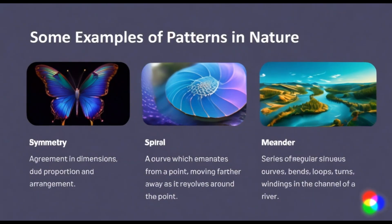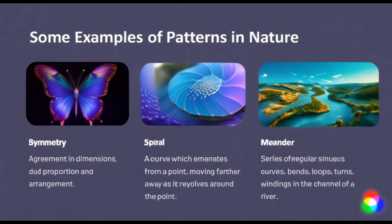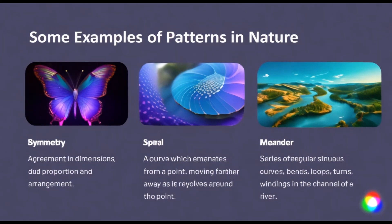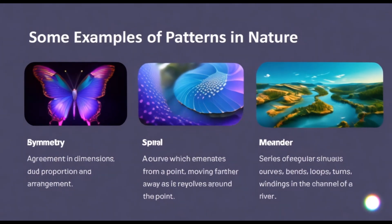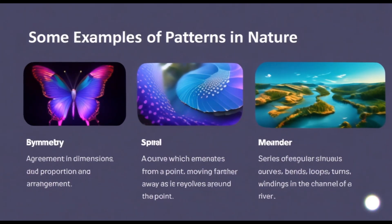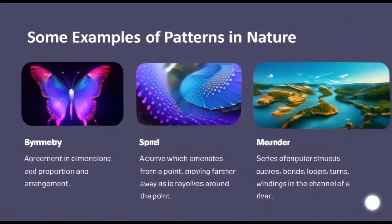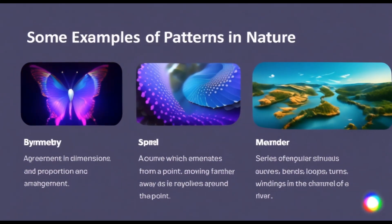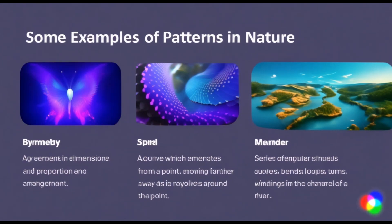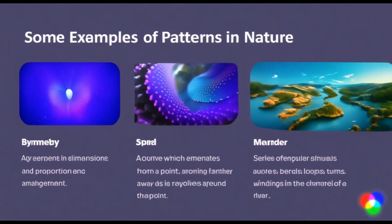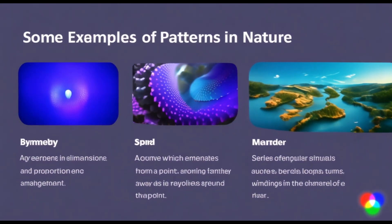Examples include symmetry in leaves, the spiral of a nautilus shell, meanders of a river, and the fractals found in plants like ferns. These patterns are not just visually pleasing — they reveal the mathematical structure of nature.